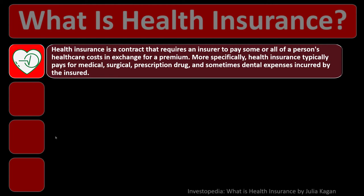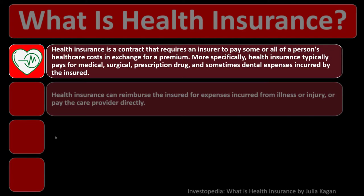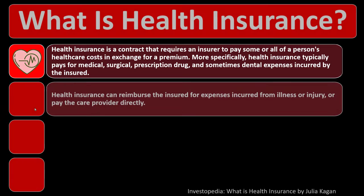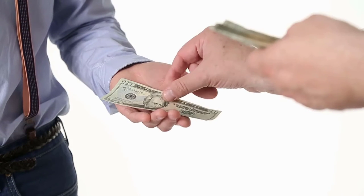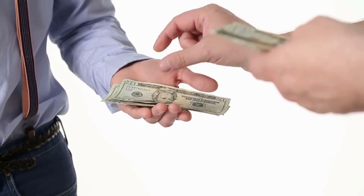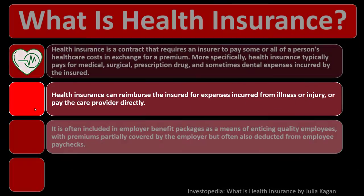Health insurance typically pays for medical, surgical, prescription drugs, and sometimes dental expenses incurred by the insured. We want to determine which components are covered and which are not for the type of health insurance plan we're putting in place for our risk mitigation strategy. Health insurance can reimburse the insured for expenses incurred from illness or injury, or pay the care provider directly, depending on the circumstances and the insurer.